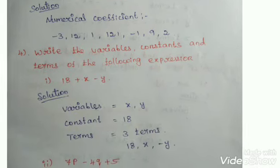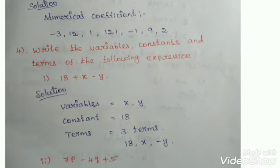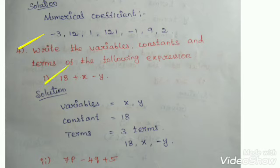Next, question C4: Write the variable, constant and the terms of the following expression. The first expression is 18 plus X minus Y. What are the variables here? Letters like A, B, C, D — here they are X and Y. So variable is X and Y.